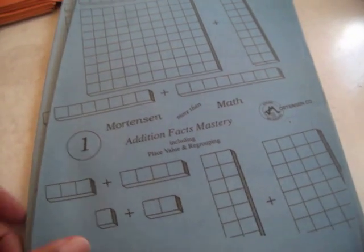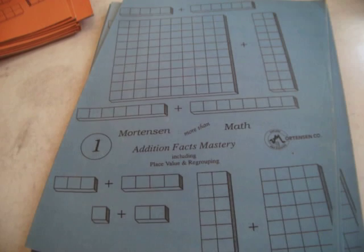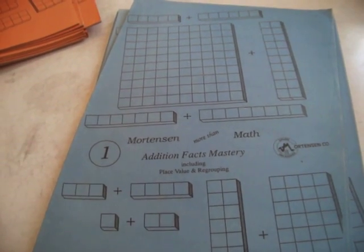Addition Facts Mastery. Now, many people think we have to start here with Addition Facts Mastery, but actually we could start with any of the books I've been showing you. In one video I could not say concurrently to save my life, I always kept saying consecutively, but the idea is to do these books concurrently.